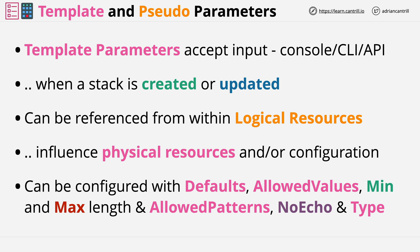You can define the parameter as using no echo, which is useful for passwords where you don't want the input to be visible when it's being typed. Each parameter can also have a type — simple ones like string, number, or list, but also AWS-specific ones which allow you to specify a VPC or subnets from a list, and some of these can be populated interactively based on the region and account you're applying the template within.